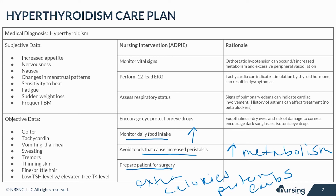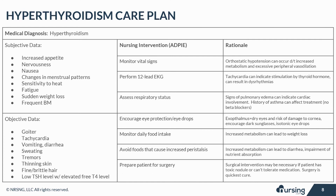Surgical intervention to remove part or all of the thyroid may be necessary in cases where the patient is unable to tolerate antithyroid medications, or if the cause is a toxic nodule on the thyroid. Surgery is the quickest cure for hyperthyroidism with a relatively quick recovery period. Here is a look at the completed care plan for hyperthyroidism.